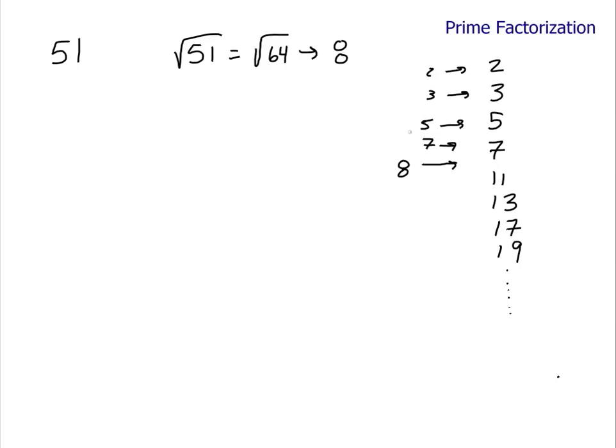I need to check these numbers against 51. And if one of them goes into 51, then I know the number is not prime, but composite. And so 51, 2 goes into 51, how many times? Not very evenly. 51 goes into 3, yes, 17 times. And so, again, 51 equals 3 times 17.